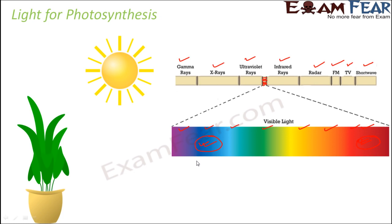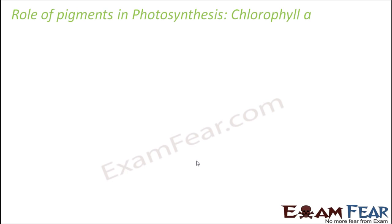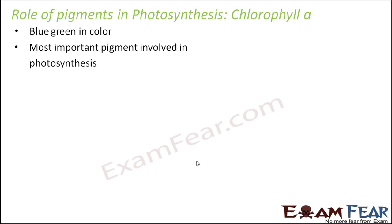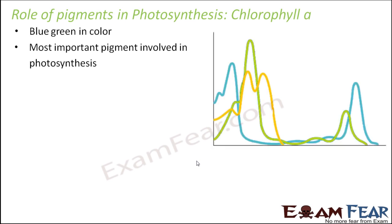Let us talk about each of those pigments in a little more detail — what is the role of those pigments? Chlorophyll A is a blue-green colored pigment and it is the most important pigment involved in the process of photosynthesis. It is the pigment which primarily absorbs light from the visible section. Maximum absorption occurs in the blue-red region of the spectrum, as we observed from the Engelmann experiment — the oxygen-loving bacteria accumulated more in the red and blue regions, meaning maximum photosynthesis occurred there.